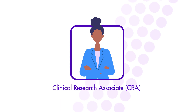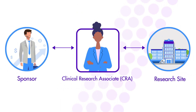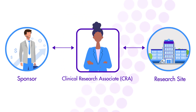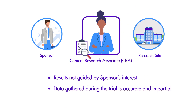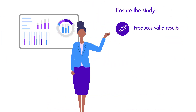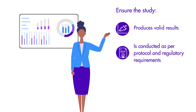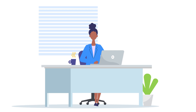Your role is to chiefly act as a liaison between the sponsor or the CRO and the site where the study is taking place. It is essential that the results of the trial are not guided by the sponsor's interest and that the data gathered during the trial is accurate and impartial. Your role is critical in ensuring that the study produces valid and correct results and making sure that the study is conducted as per the protocol and ethical and regulatory requirements.